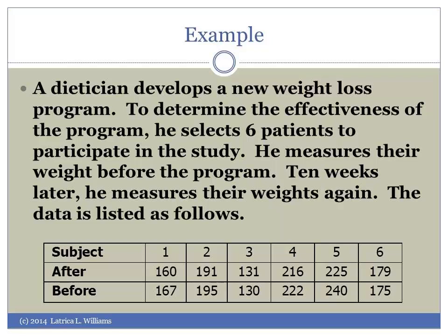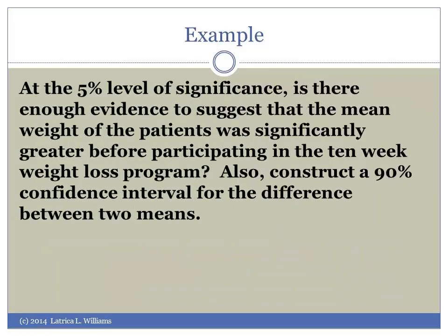At the 5% level of significance, is there enough evidence to suggest that the mean weight of the patients was significantly greater before participating in the ten-week weight loss program? Also, construct a 90% confidence interval for the difference between two means.